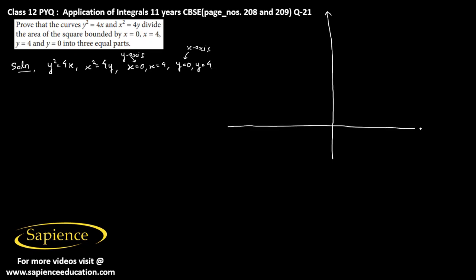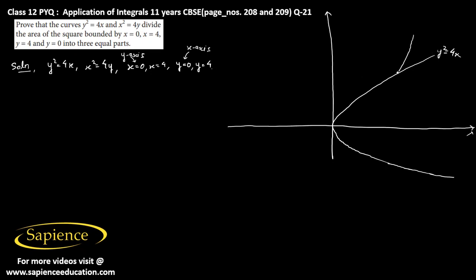Let's say this is the x-axis and this is the y-axis. The graph of y squared equals 4x will be approximately like this, and x squared equals 4y will be like this. x equals 0 is the y-axis and x equals 4 is the vertical line at x equals 4.